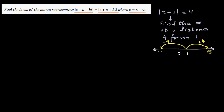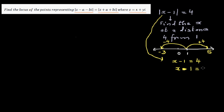So how do you do it algebraically? Solving this algebraically, x - 1 can be 4, because |4| = 4, or x - 1 can be -4, because |-4| = 4. Solving this, x = 5 and x = -3. This is all absolute value means.